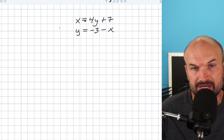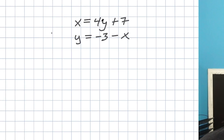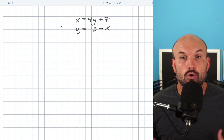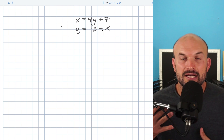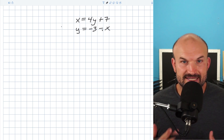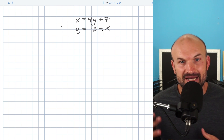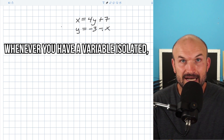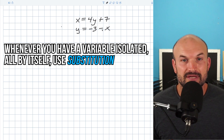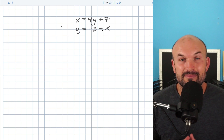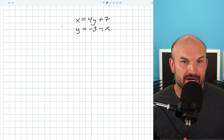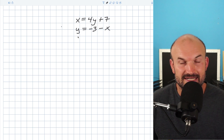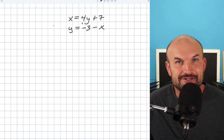So let's take a look at this first example where you can see I have x equals 4y plus 7 and y equals negative 3y minus x. My golden rule that I like to follow when solving a system of equations — my main tip — is whenever you have a variable isolated all by itself, use substitution. Any other type of problem, a lot of times elimination is going to be better. But when you have a variable already isolated, in this case we have both of our variables isolated, go ahead and just use substitution.